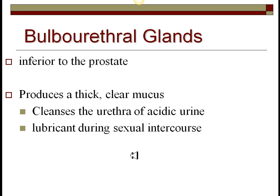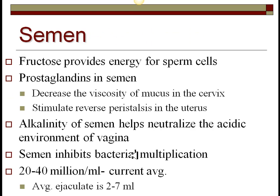The bulbourethral gland is another tiny gland, sometimes called the Cowper's gland, located inferior to the prostate. It produces a clear mucus that cleanses the urethra and acts as a lubricant during sexual intercourse. The semen itself is mostly coming from the seminal vesicle, but semen as a whole has the sperm mixed in as well.